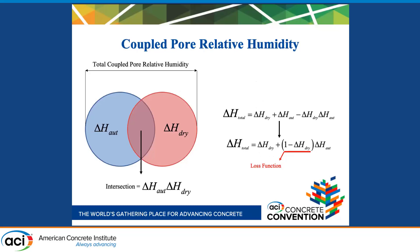Getting to the meat of our model: the assumption that shrinkage is proportional to the change in pore relative humidity resulted in us creating a pore relative humidity model first before creating our shrinkage model. The coupling of change in pore relative humidity due to self-desiccation and drying resulted in us creating a loss function. In this Venn diagram we have our change in relative humidity due to self-desiccation and drying. We had to remove the overlapping middle part to get the total change in pore relative humidity, which is represented by the equations to the right of the Venn diagram.